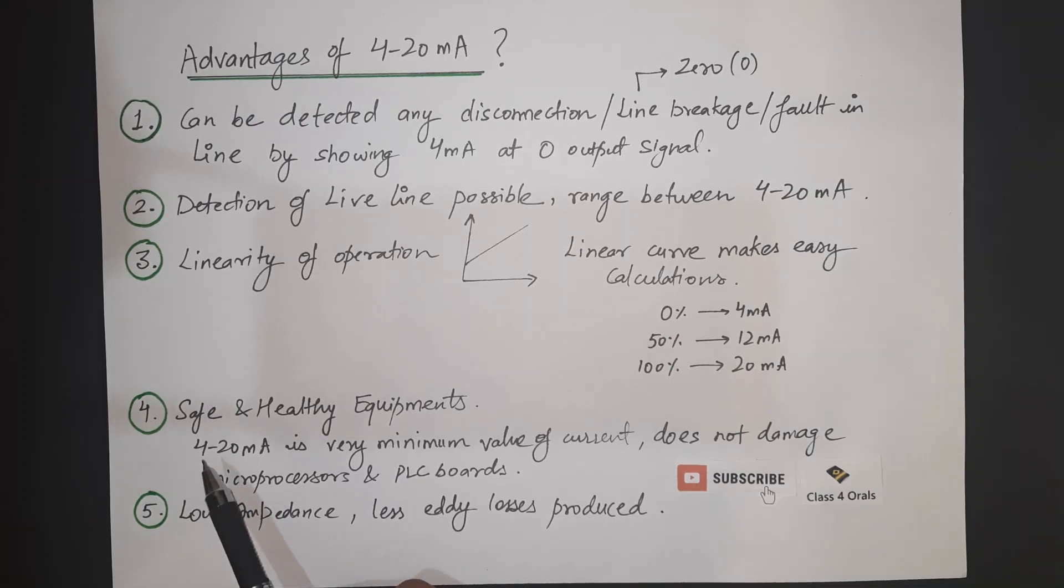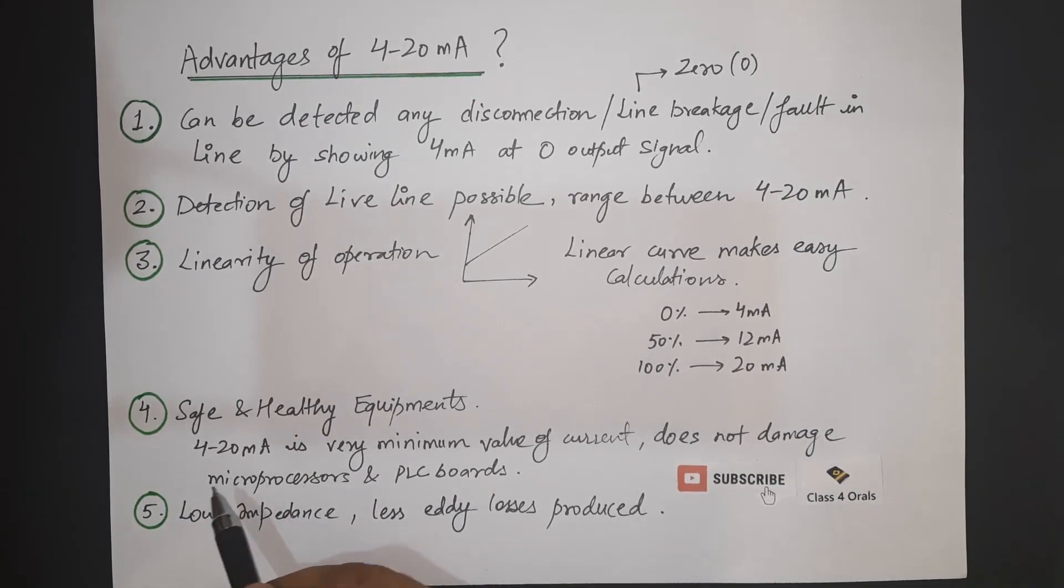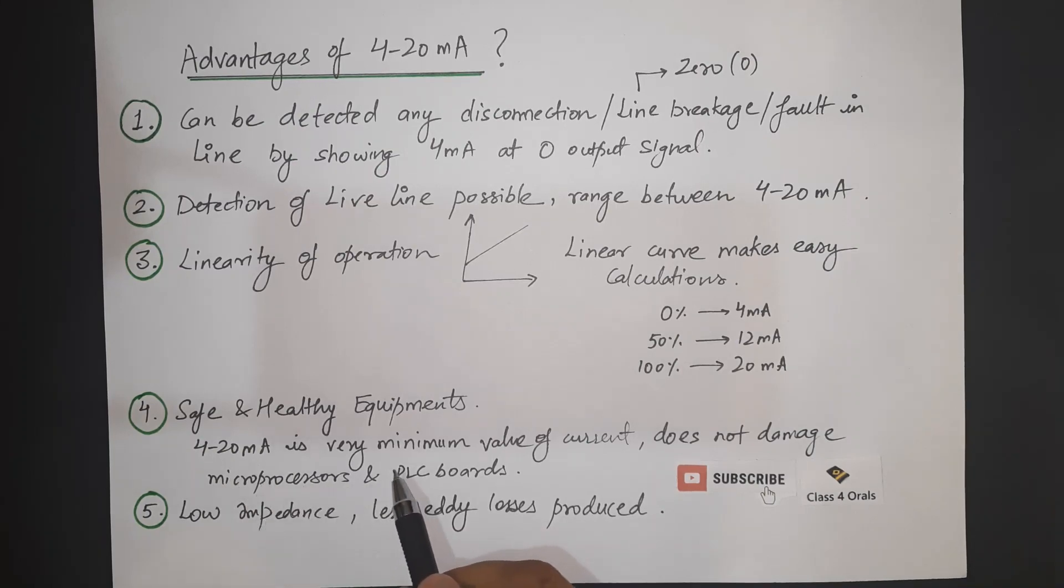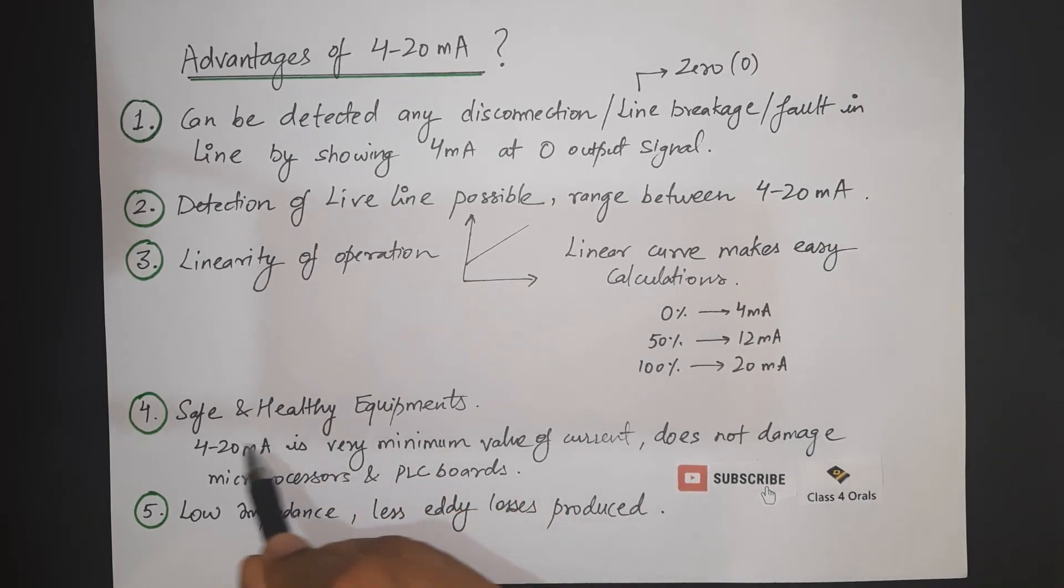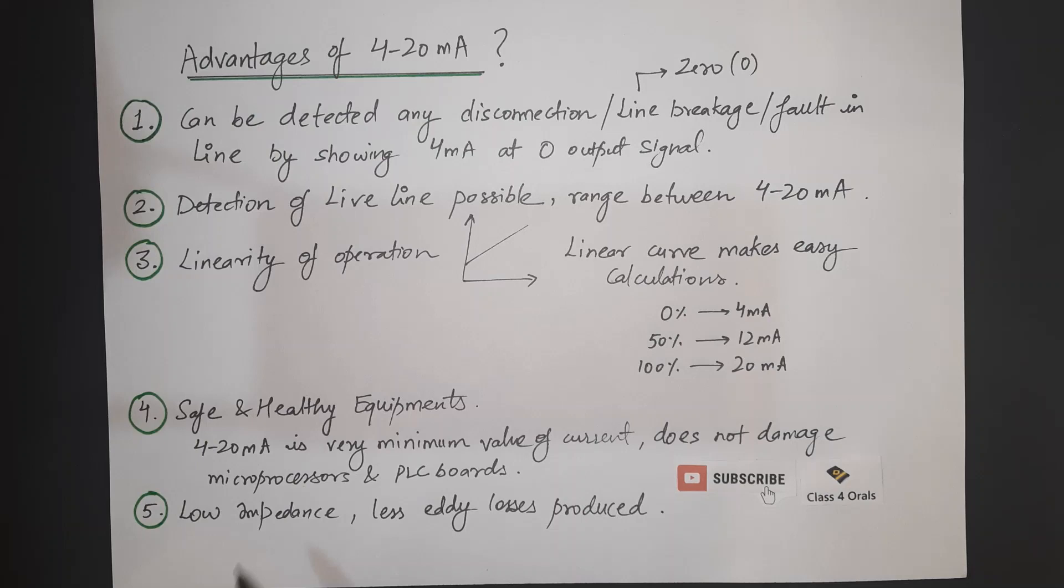Fourthly the safe and healthy equipments are met because the 4 to 20 mA is a very minimum and very small amount of the current and it does not damage the microprocessors and PLC boards because this value is very much small very negligible mA 4 mA is very small quantity and it is not going to damage.